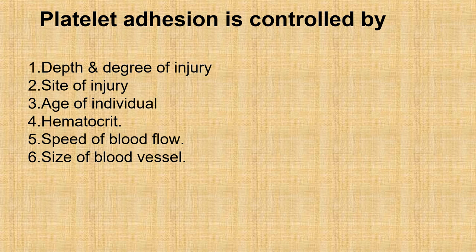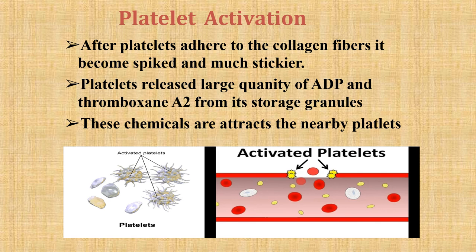After platelets adhere to collagen fibers, they become spiked and much stickier. Platelets release large quantities of ADP and thromboxane A2 from storage granules, attracting nearby platelets and causing one-to-one platelet sticking and activation.